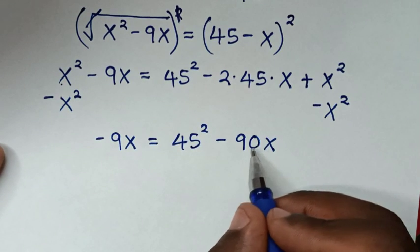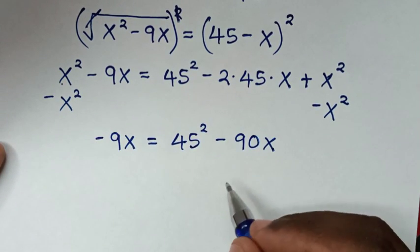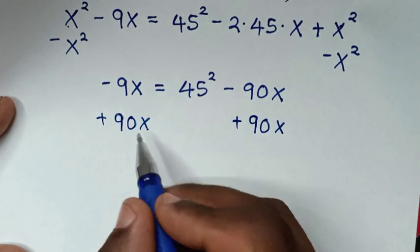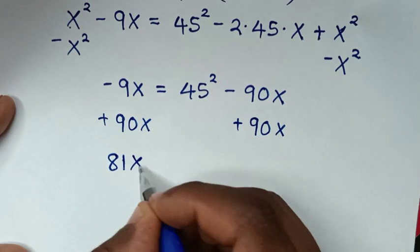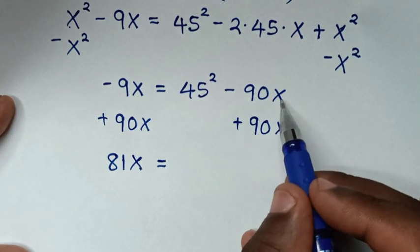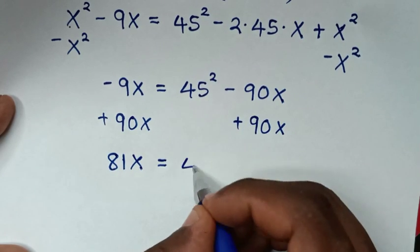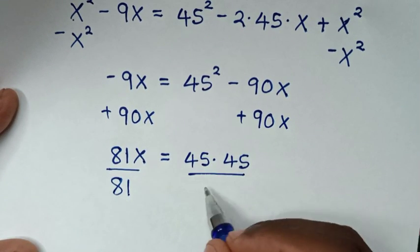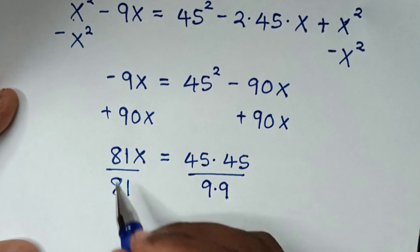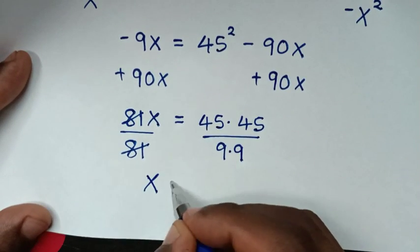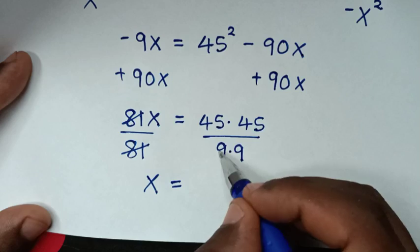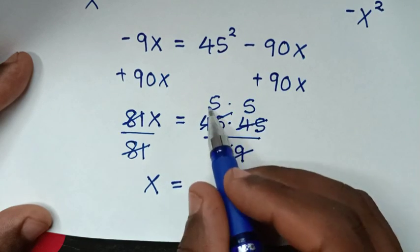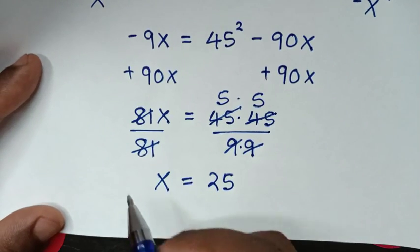We add 90x to both sides: 90x minus 9x is 81x, equal to 45 squared. We then divide both sides by 81, where 81 is 9 times 9. 45 divided by 9 is 5, so x equals 5 times 5, which is 25.